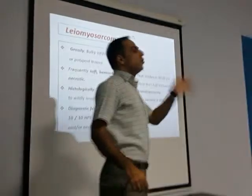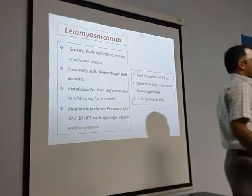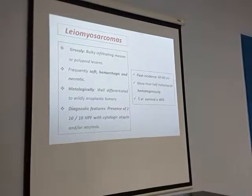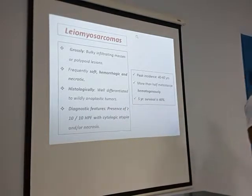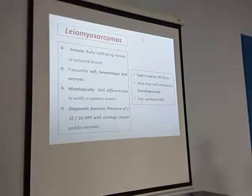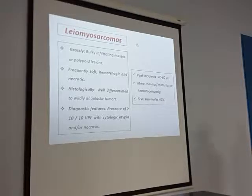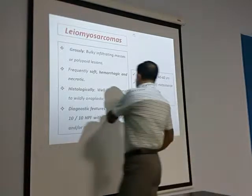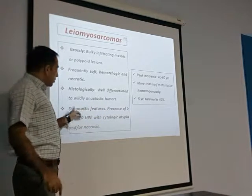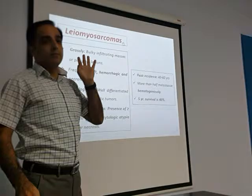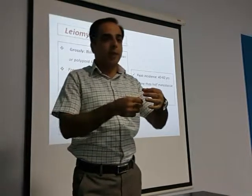How can you say this is a leiomyosarcoma and this is not a leiomyosarcoma? Definitely three features you have to consider. Presence of equal to or more than 10 mitoses per 10 high power fields. So if it is less mitosis, you cannot say this is leiomyosarcoma. You can put it under the uncertain malignant potential tumors — borderline tumors. So for diagnosing it, you should have 10 or more than 10 mitoses per 10 high power fields under the microscope.